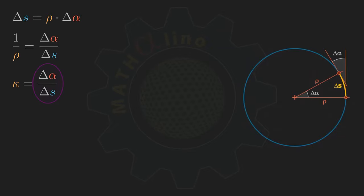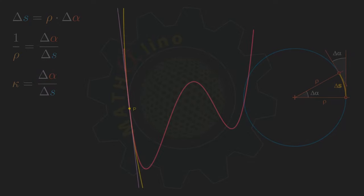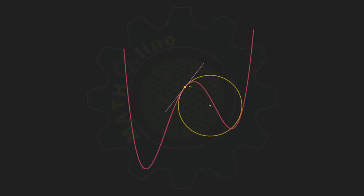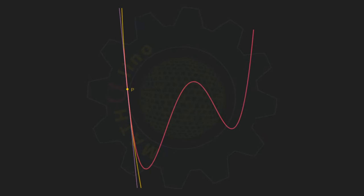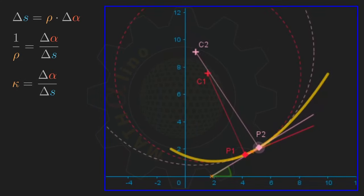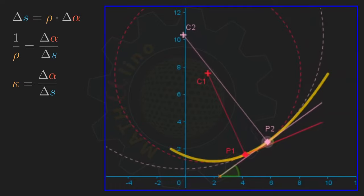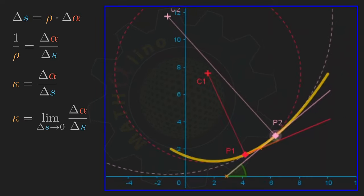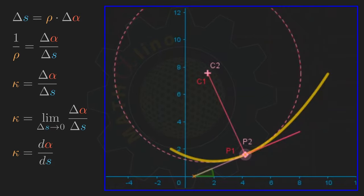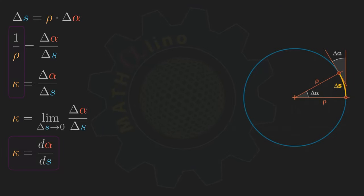In the case of a circle, the quantity delta alpha over delta s is constant, which means that the change in direction per unit length — say, per meter — is also constant. However, for non-circular curves, the direction no longer changes uniformly, and the quantity delta alpha over delta s represents the average curvature of the arc delta s. But as P2 approaches P1 along the curve so that delta s and delta alpha approach zero, the ratio delta alpha over delta s approaches a limit, and this limit is equal to d alpha over ds.